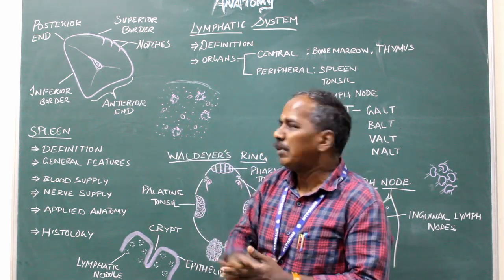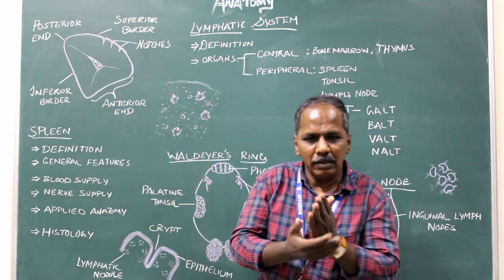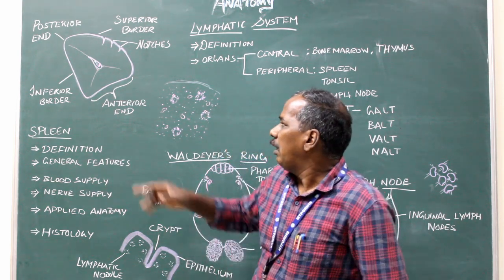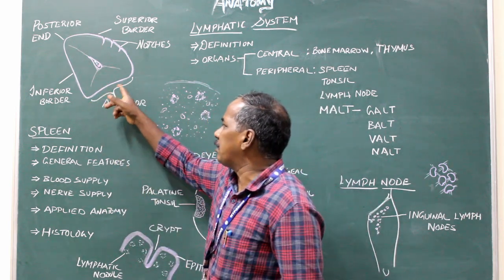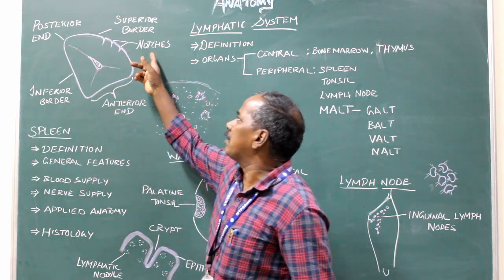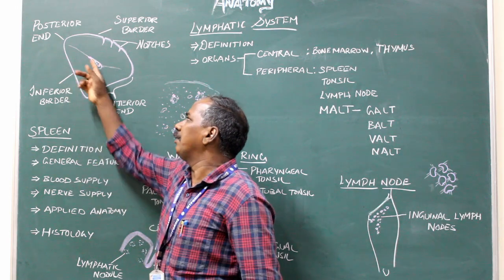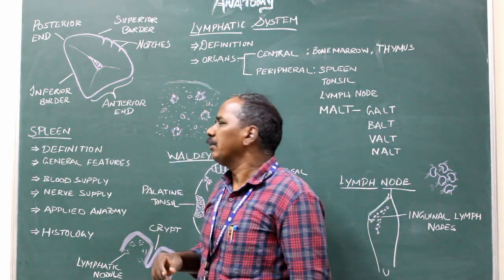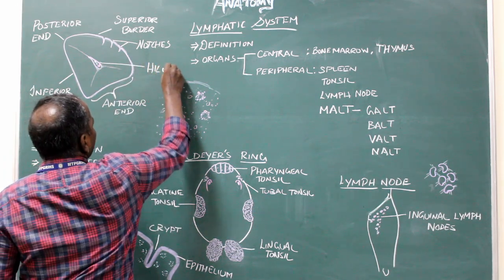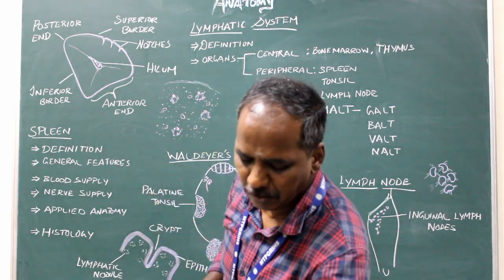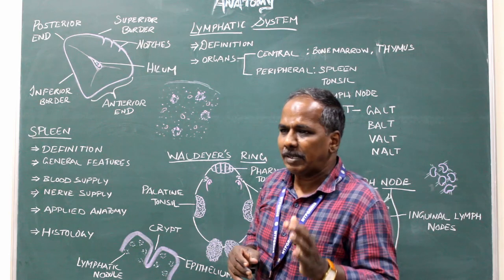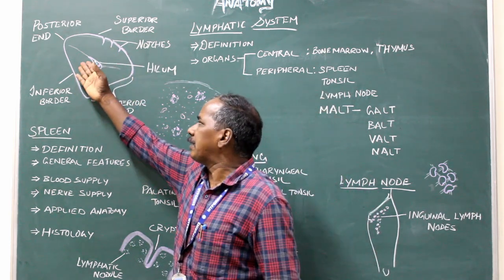The spleen has two surfaces: the visceral surface and the diaphragmatic surface. It has two ends: the anterior end, which is broad, and the posterior end. It has three borders: the superior border, which presents notches; the inferior border; and the medial border. The visceral surface presents three impressions: gastric impression, renal impression, and colic impression.